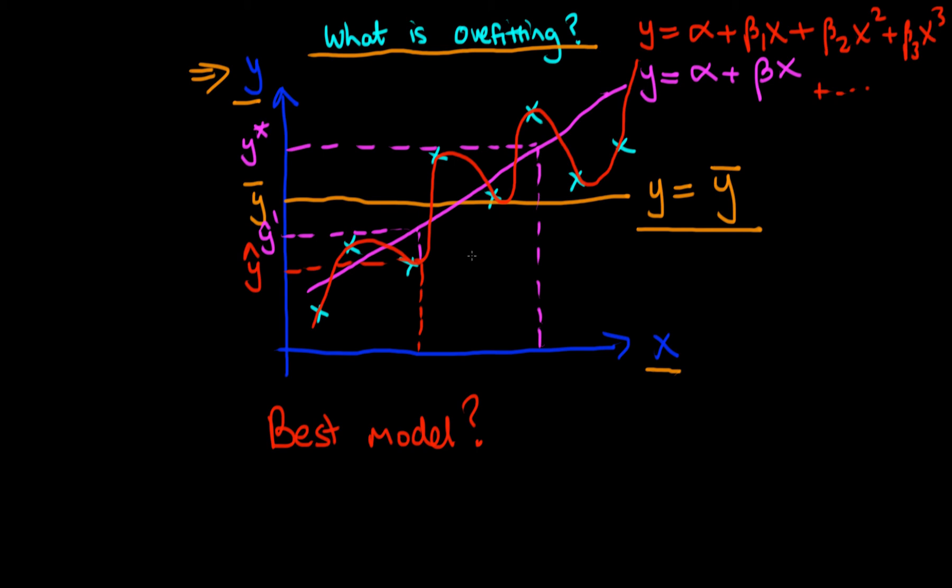But it certainly, the relationship between x and y certainly isn't that which is captured by the red line. I mean, do we really believe that if we increase x from here to here that actually the y value decreases? Similarly, do we then believe that that trend then reverses between this value of x and this value of x? It just doesn't seem to be a very logical model.